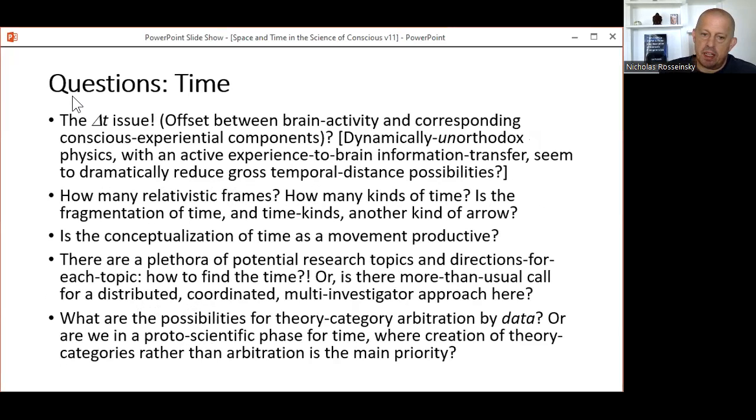And moving on to time, the most basic question concerns the delta-T issue—that's the offset between brain activity and corresponding conscious experiential components. As I mentioned earlier, dynamically unorthodox physics with an active experience-to-brain information transfer can severely limit the sign and magnitude of delta-T. In the relativistic arena, how many preferred frames does the existence of experiential systems give rise to? Beyond relativity, is it either right or helpful, or both, to conceive of relativistic time, experiential time, and quantum time as three different kinds? If there are multiple kinds, and even if there are not, does the hypothesis of time fragmentation and recoherence suggest or even establish another kind of arrow of time?